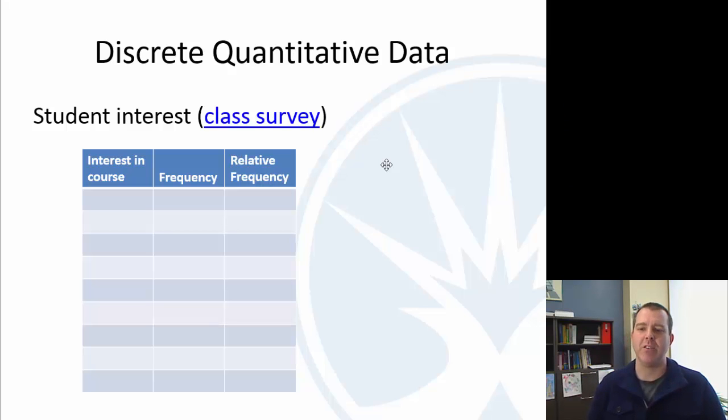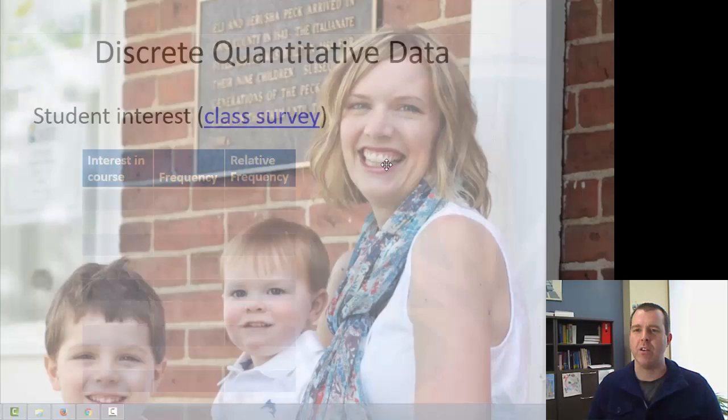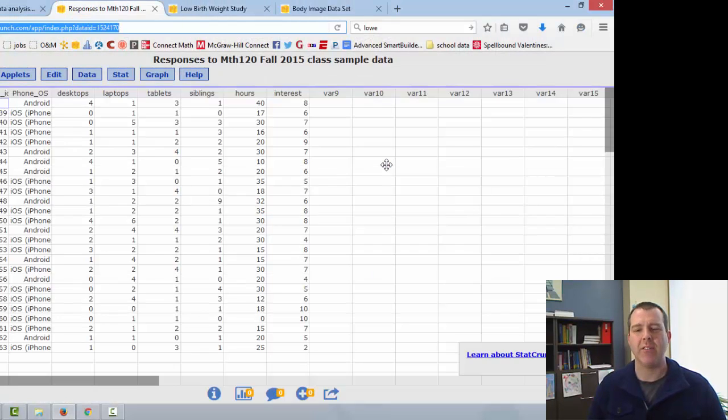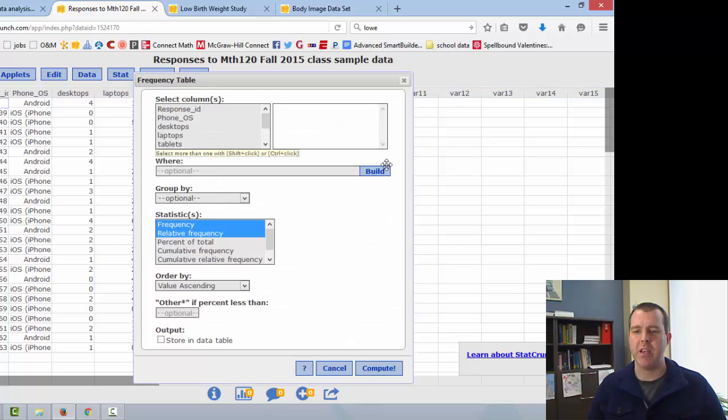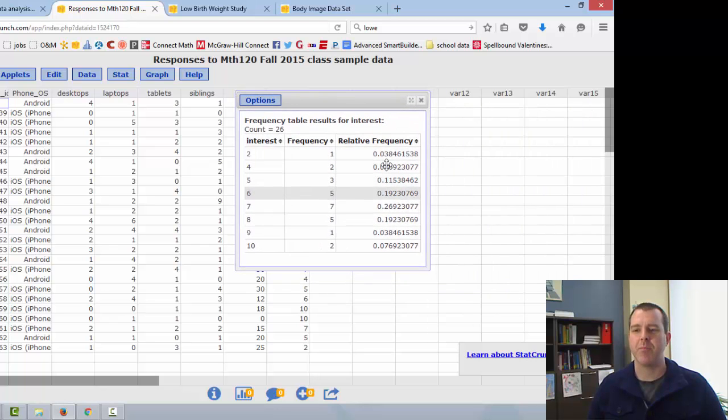So I have some data from a previous student survey. I've got this in StatCrunch. This was from Fall 2015, and I had students answer how many desktops they have in their house, laptops, tablets, number of siblings. So one thing I asked was to rate their interest from 1 to 10. What I would do is go stat tables frequency, relative frequency, and I want to do interest in the course. And with discrete data, you'll see that it just lumps them individually unless you have a really wide range. But here it just listed them individually, which is what it does for discrete data.